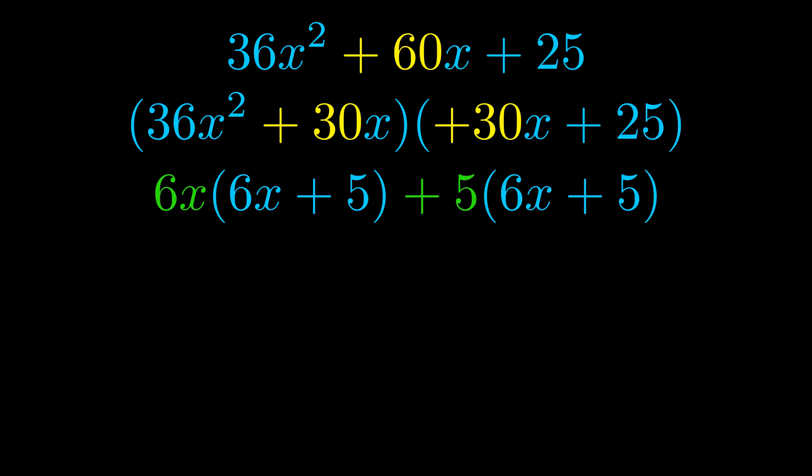Notice also how what remains inside of the parentheses is the same in both cases. The blue values are the same. Those blue values will become one of our factors, and we will combine the two green values, the GCFs that we pulled out, to get the other one. And that is our fully factored equation.